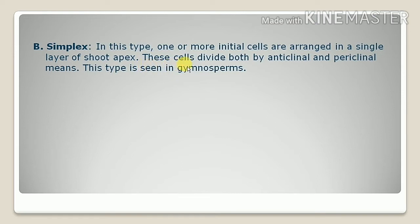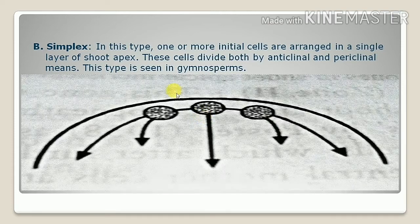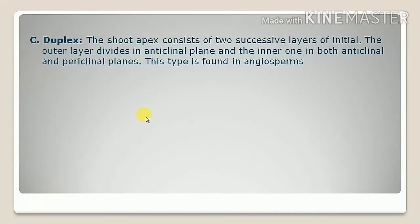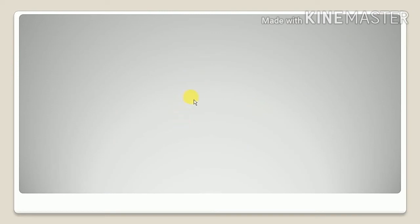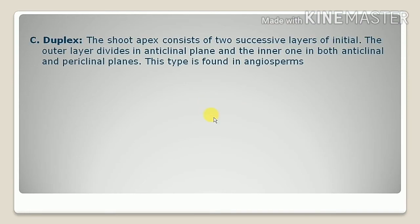In the simplex type, the initial cells divide in both anticlinal and periclinal manner, and these are found in gymnosperms. In the duplex type, the shoot apex consists of two successive layers of initials: the outer layer divides in an anticlinal manner and the inner one in both anticlinal and periclinal manner. This type is found in angiosperms. This concludes our topic on shoot apical meristem.